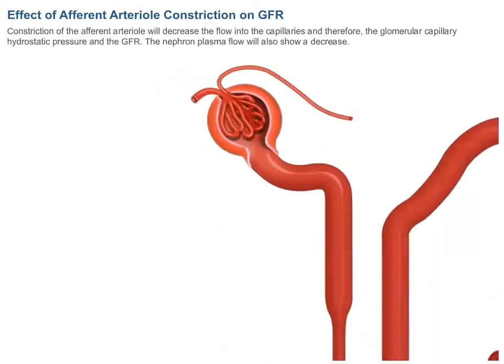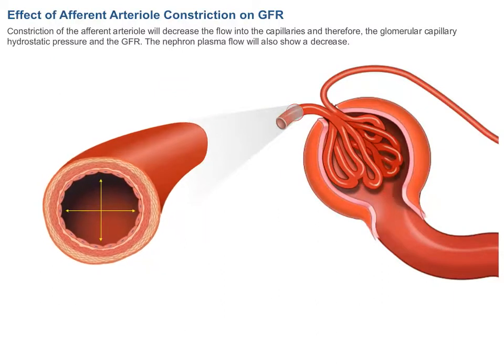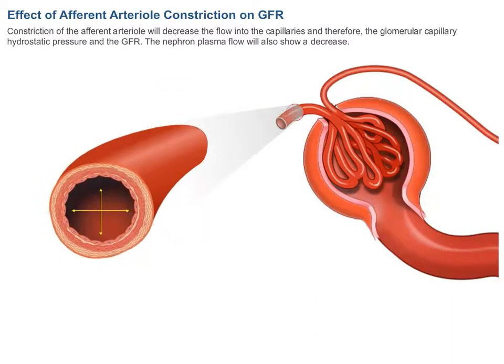Effect of afferent arteriole constriction on GFR: constriction of the afferent arteriole decreases blood flow into the glomerular capillaries, reducing the glomerular capillary hydrostatic pressure and therefore the GFR. Nephron plasma flow also shows a decrease.